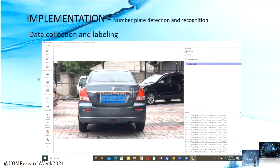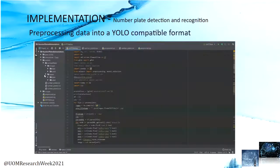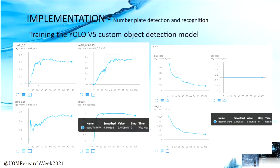These are the implementation steps of number plate detection and recognition. First, data is collected and labelled using LabelImg tools. Then those data are preprocessed into a YOLO-compatible format. After that, the images are trained using a YOLO version 5 custom object detection model, and these are the test results we obtained through the training process.